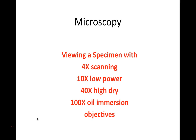When viewing a specimen with your microscope, we have the possibility of using four different objective lenses. An objective lens is a magnifying lens; we denote the power using the letter X. We have a 4x scanning objective lens, a low power 10x objective lens, a 40x high dry, and a 100x oil immersion objective.